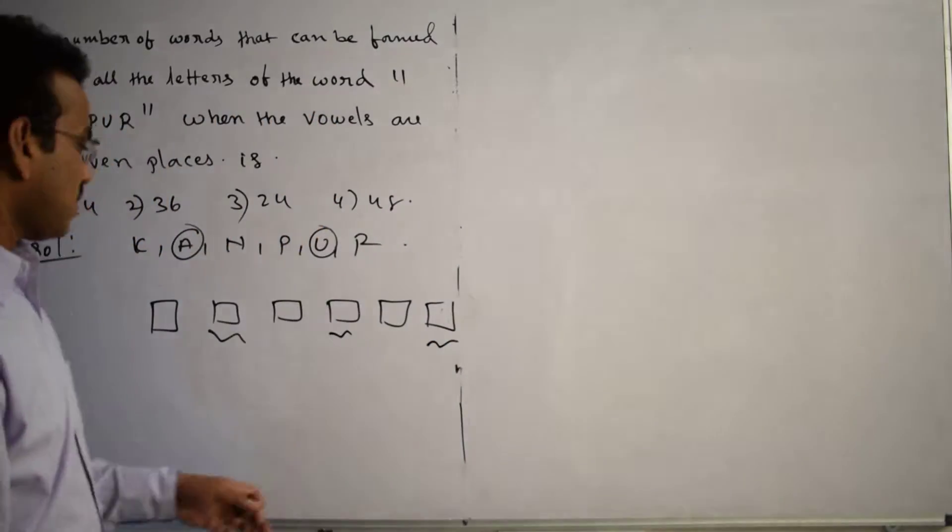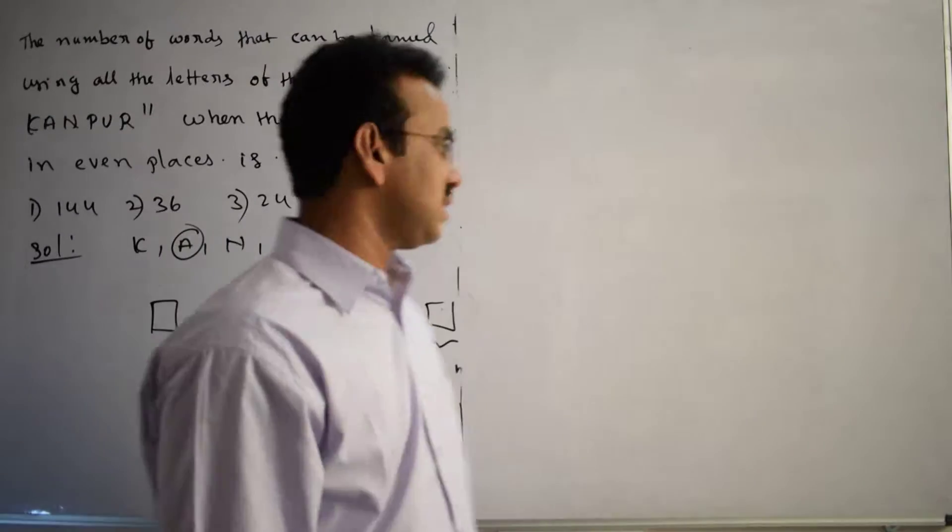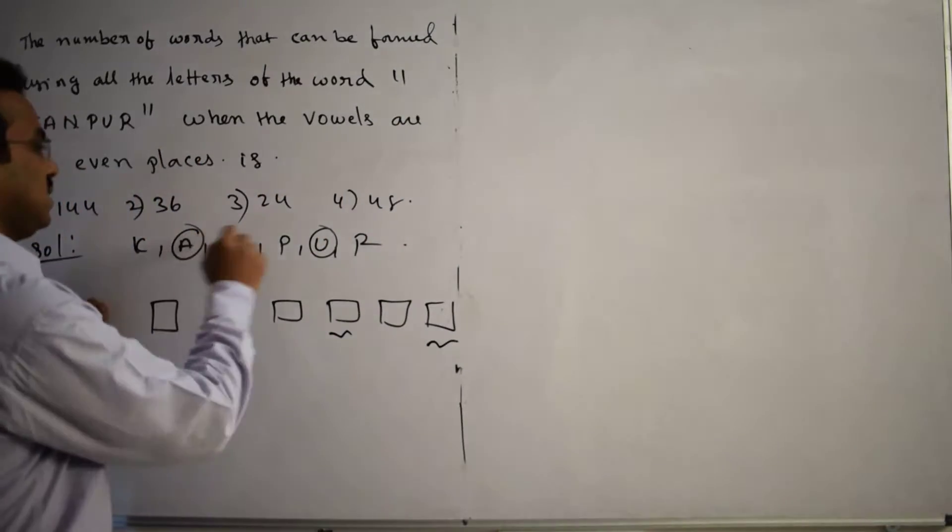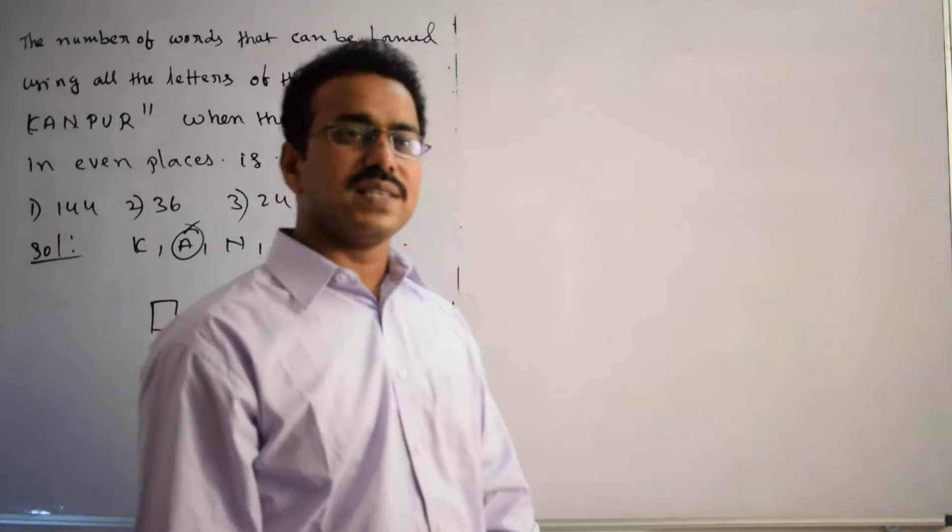So first we will be thinking about filling the even places, even place boxes. See how many vowels are available? 2 vowels are available. See how many boxes? 3 boxes. How many ways can I place here? 3P2 ways I can fill.